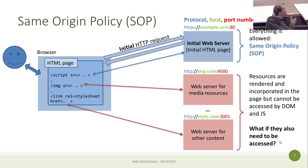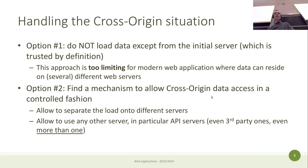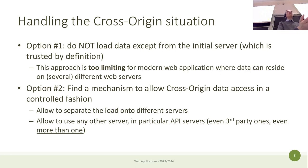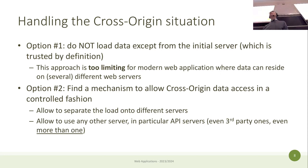Modern web applications load data from different web servers all the time. In our course we already have this situation: our React application origin is localhost:5173, but we developed an API server on a different port. We need to be able to access it — otherwise it's useless. So we need to find a way to solve this cross-origin situation.